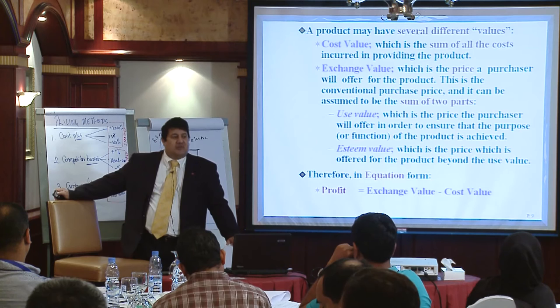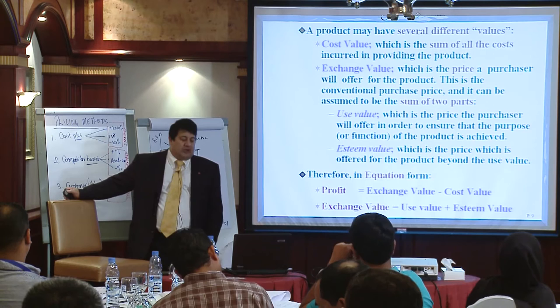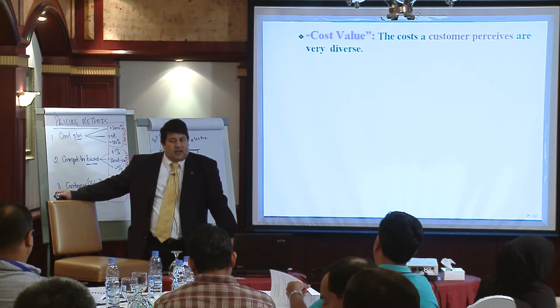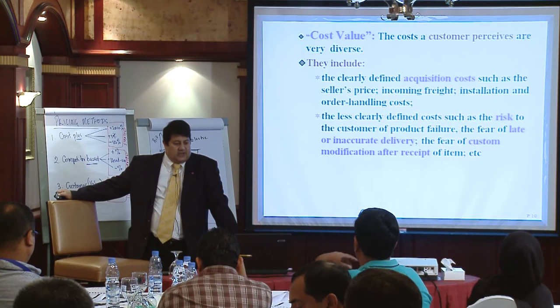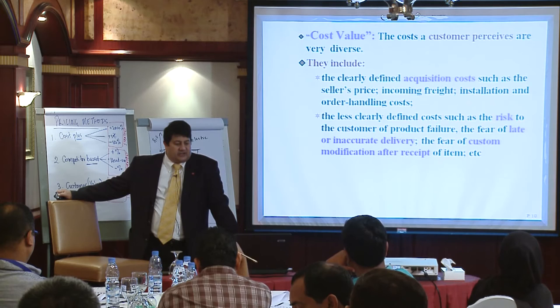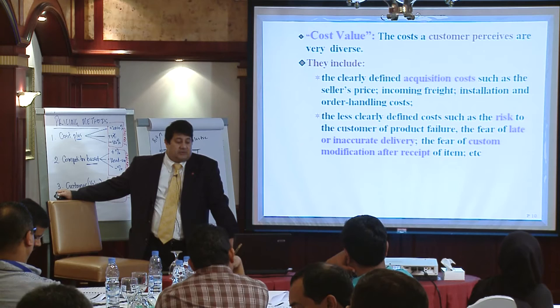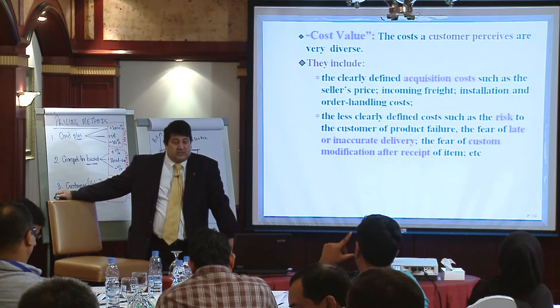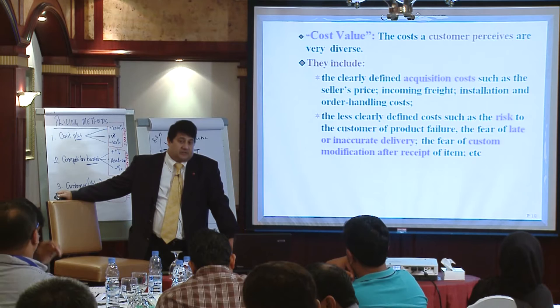In equation form: profit equals exchange value minus cost value, and exchange value equals use value plus esteem value. The cost the customer perceives can be diverse. In an industrial situation, they include clearly defined acquisition costs such as the seller's price, incoming freight, installation, and order handling costs — as well as less clearly defined costs such as the risk of product failure, the fear of late delivery, or fear of custom modification after receipt. That is why after-sale service and warranties help reduce this risk.